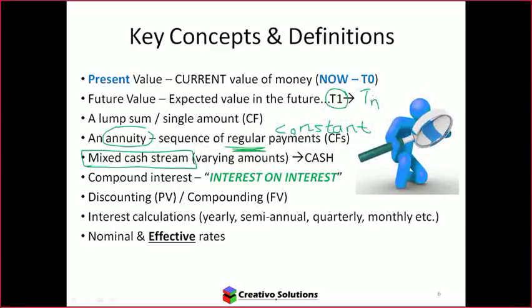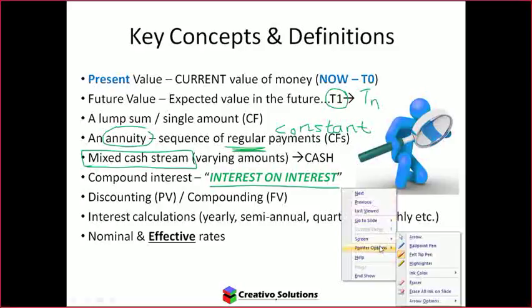Compound interest means interest on interest. The returns you earn generate more return because they're reinvested. With compounding, I can take amounts forward or backwards — it refers to this concept of interest on interest. Interest can be compounded yearly, semi-annually, quarterly, monthly, or more frequently. The interest rate determines how quickly or slowly something grows, or how quickly or slowly discounting is applied.